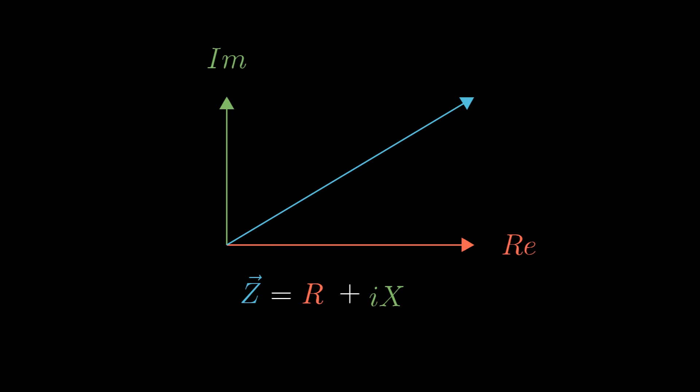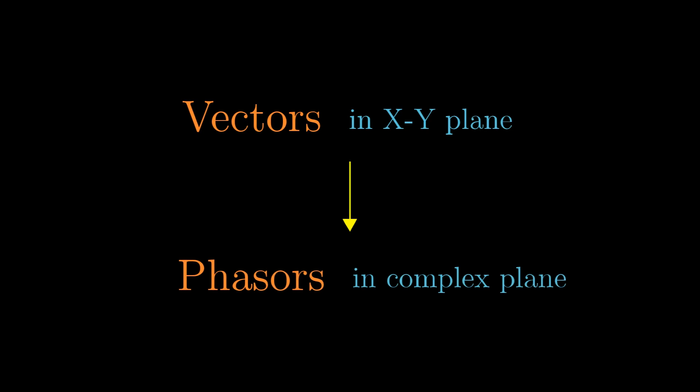And because electrical engineers already decided to use I to represent current, which stands for intensity of current by the way, we will use J to represent the imaginary number, much to the scorn of mathematicians everywhere. So our 2D vector is actually a complex number.